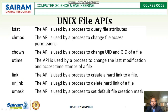Next is the link API. This API is used by a process to create a hard link to a file. A hard link means providing a different path for a file — creating another reference or path to the same file. Then, unlink. The unlink API is used by a process to delete a hard link of a file, or to delete data from a file.